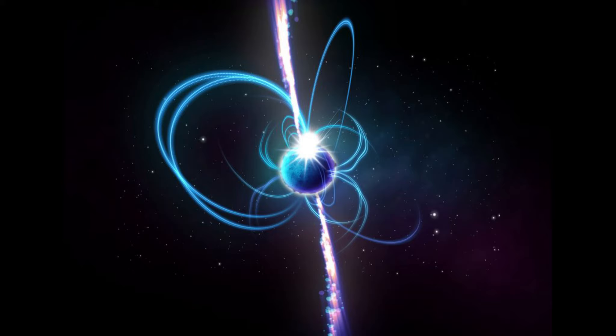The mysterious object that has just been discovered could also be a magnetar, which is an incredibly magnetic neutron star. Astrophysicist Dr. Natasha Hurley-Walker from the Curtin University International Centre for Radio Astronomy Research in Australia led the team that made the discovery.